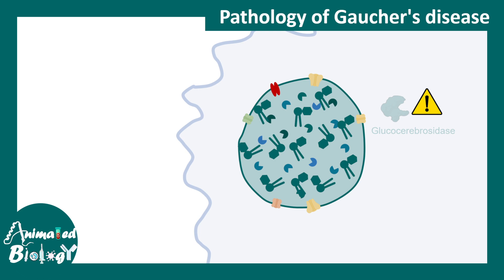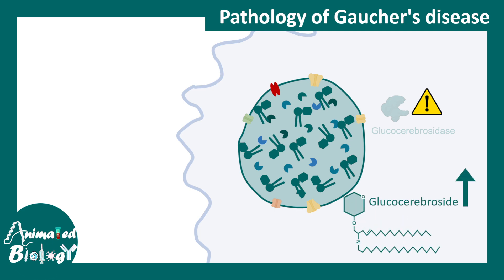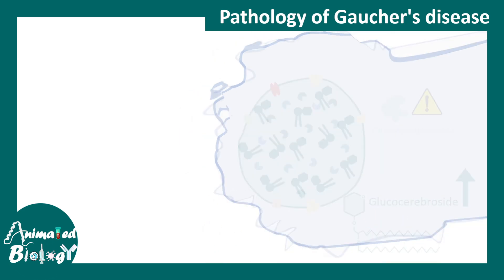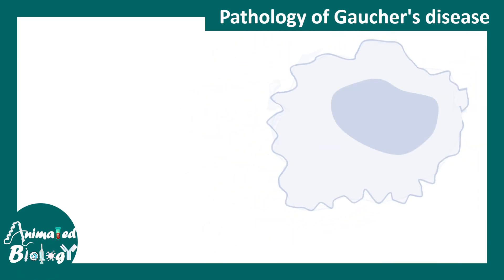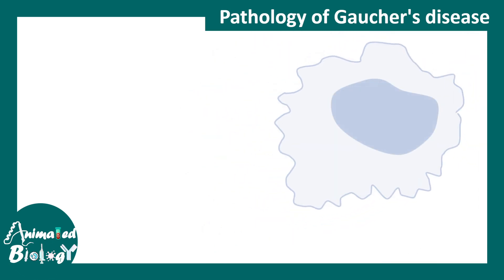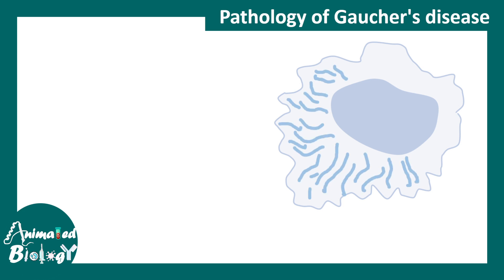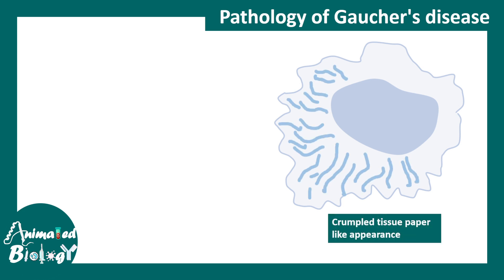When the fatty products build up inside the lysosome, this gives the macrophages a different appearance — kind of like a crumpled tissue paper appearance. This is very characteristic of Gaucher disease.